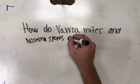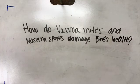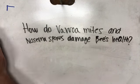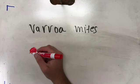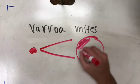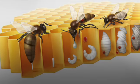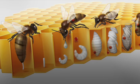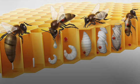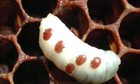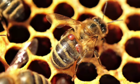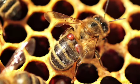Varroa mites damage honey bee health because the Varroa destructor, or varroa mites, is an external parasitic mite that attacks the honey bee species Apis cerana and Apis mellifera. The varroa mites can only reproduce in a honey bee colony, meaning it attacks many bees at the same time. It attaches to the body of the bee and weakens it by sucking hemolymph.